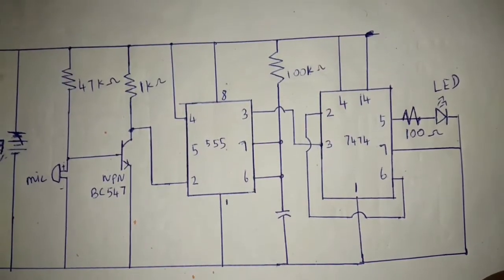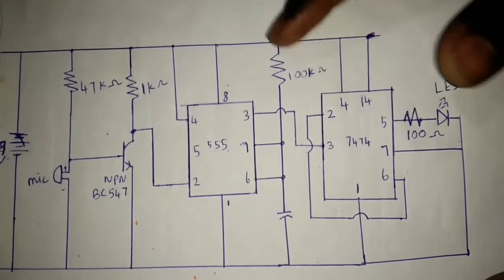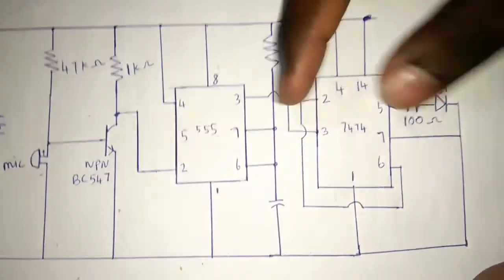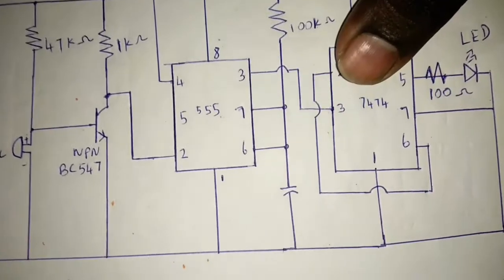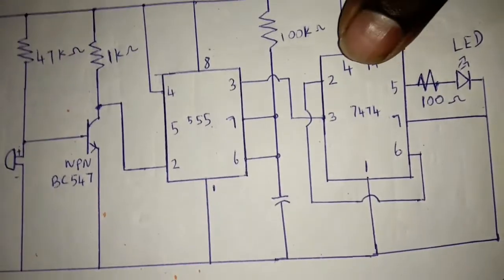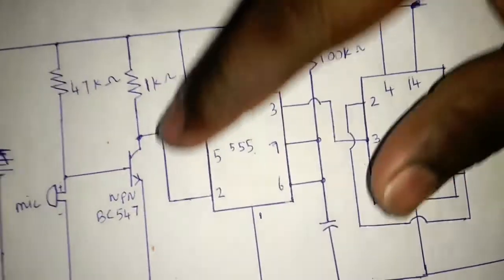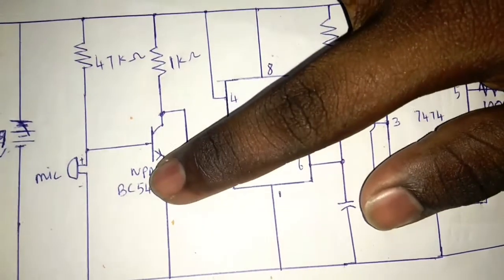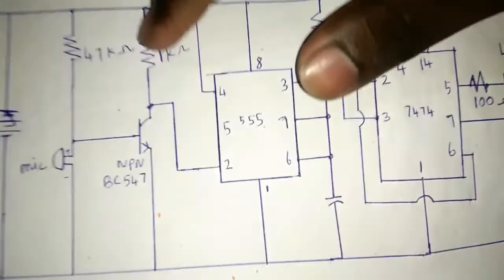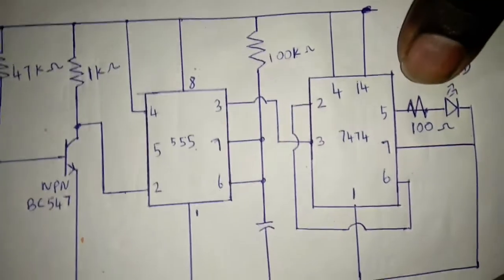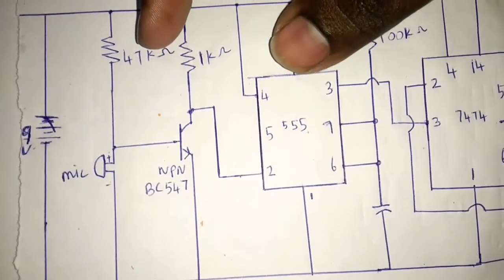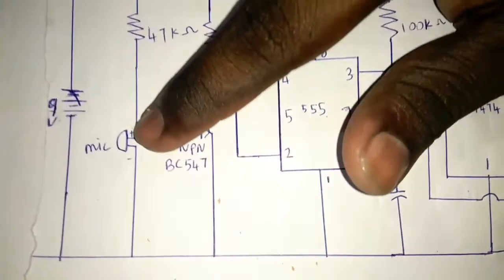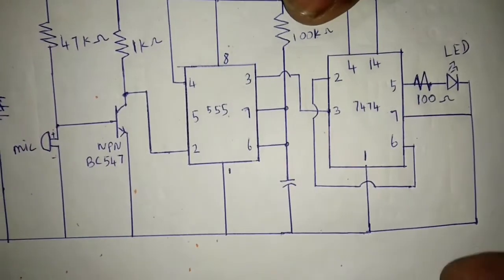This is the diagram of the clap switch, showing the IC and the 555 timer IC. This is the 7474. This is the clap switch IC. The resistors used are 100 ohm, 100K ohm, 1K ohm, and 47K ohm. This is the mic and battery. This is the circuit.